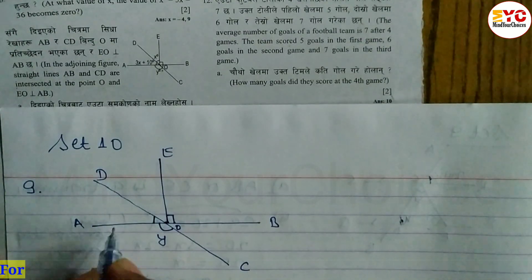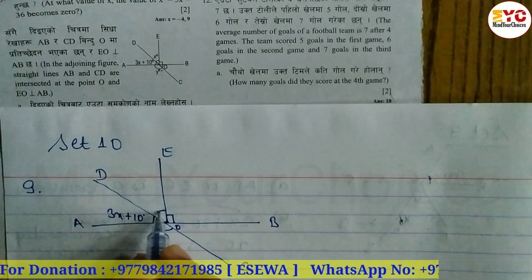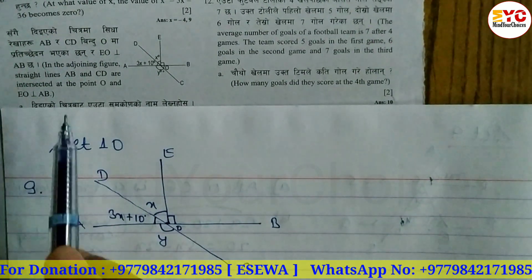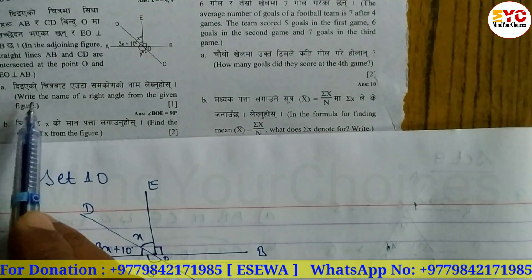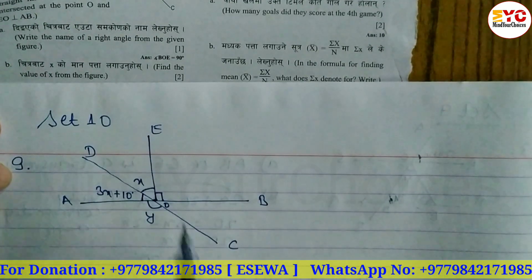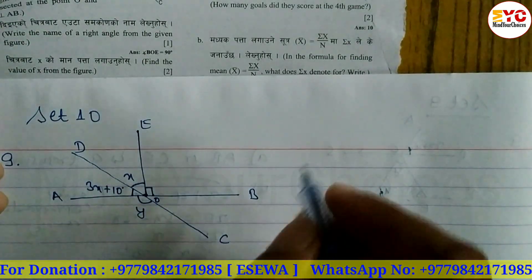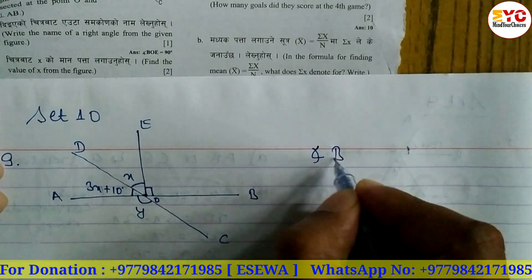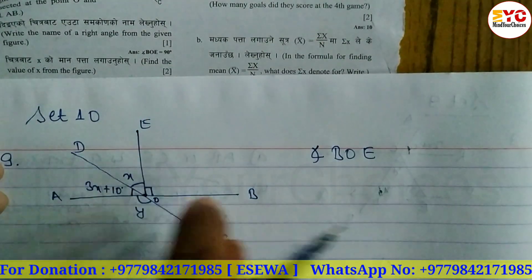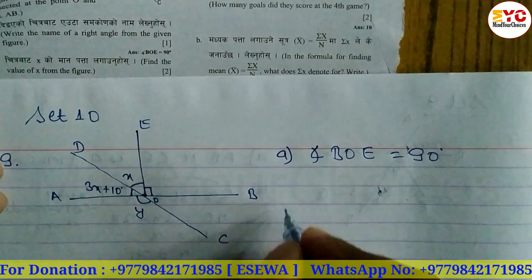Here we have an angle of 3x plus 10 degrees, and here is X. Now question A: write the name of the right angle from the given figure. Right angle is 90 degrees. So angle BOE, or EOB, is equal to 90 degrees. This is number A.